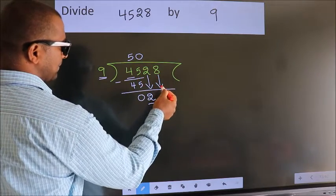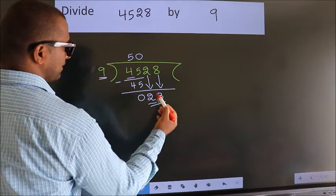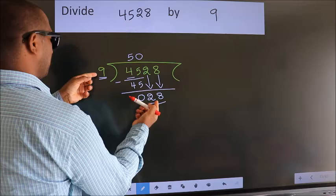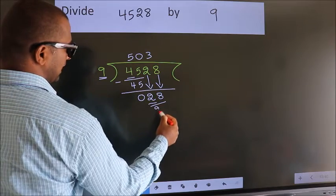Then only we can bring down this number. So, 28. A number close to 28 in the 9 table is 9 threes, 27.